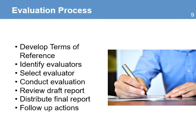Here are some of the basic steps in the evaluation process. The first is to develop the terms of reference — a document that contains all the information to guide the evaluation. Next is identifying evaluators based on their knowledge and area of expertise, then evaluating proposals and selecting an evaluator. Conducting the evaluation includes data collection and analysis. The review of the draft report gives the project manager an opportunity to ask for clarifications before the final report is submitted. Once the final report is submitted, it is distributed to key stakeholders. Finally, the follow-up actions include implementation of the recommendations in the project or in the organization. As a project manager, you will need to be fully involved in the development of the terms of reference, the selection and supervision of the evaluator, including the review of the final draft report.